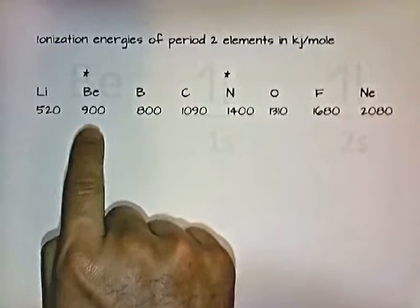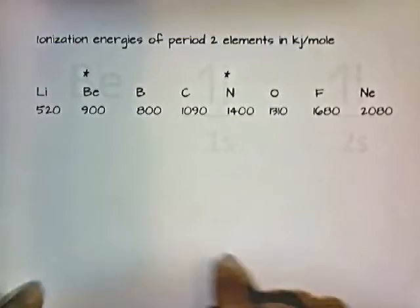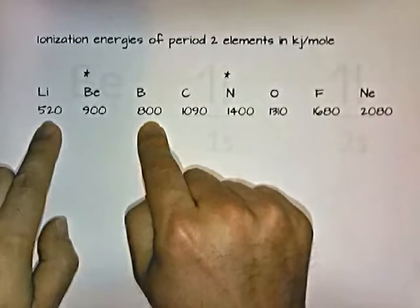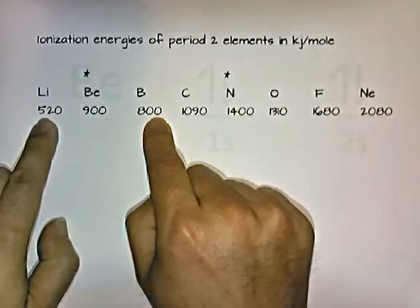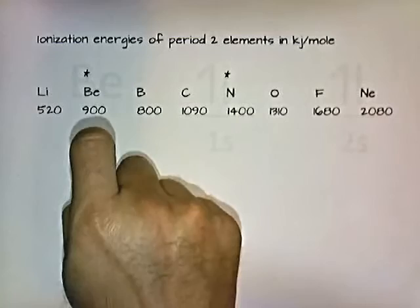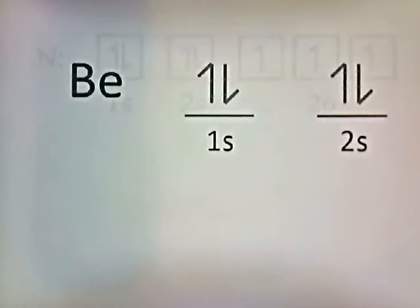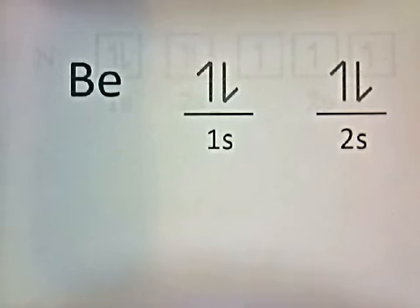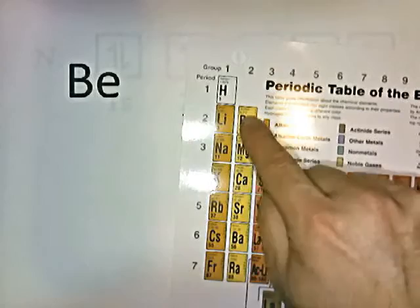Why does it do that? Let's look at the ionization energy of beryllium. We would expect it to have a value between that of lithium (520) and boron (800), so somewhere between 520 and 800. Instead, it's 900 — that's elevated. The ionization energy of beryllium is elevated because beryllium has a full S-sublevel. A filled S-sublevel stabilizes the atom, making it less reactive. Thus, beryllium and all the other elements in group 2 will have an elevated ionization energy.